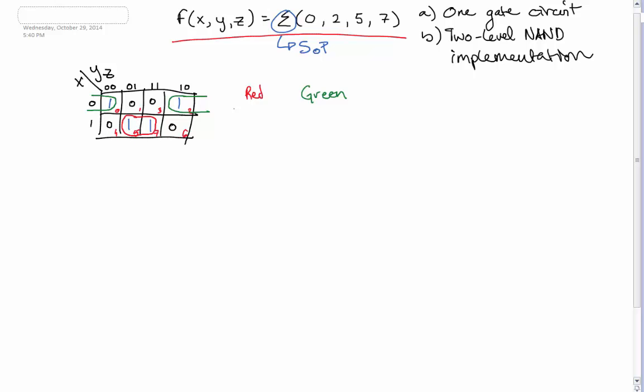So in group red, we have, oops, I forgot to put down zeros here. In group red, we have 1, 0, 1, and 1, 1, 1, and then in group green, we have 0, 0, 0, and we have 0, 1, 0.